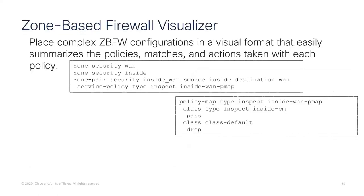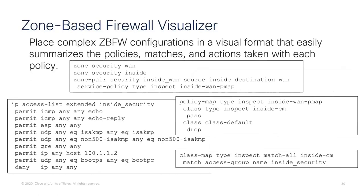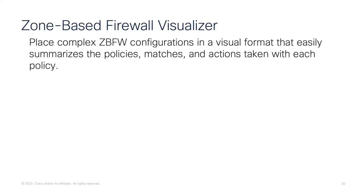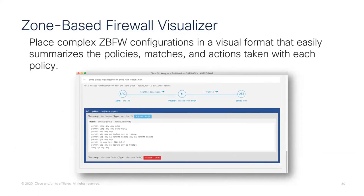The zone-based firewall visualizer was a pet project to address the complexity of unwinding zone-based firewall configurations on iOS devices — a series of nested policy maps and class maps that is very ugly on the CLI. The visualizer takes that and up-levels it to something easily consumable, showing zone pairs as the top-level category, with the policy map and class map underneath, then the access group and the action taken — presented in a very visual fashion, easy to diagnose and debug.